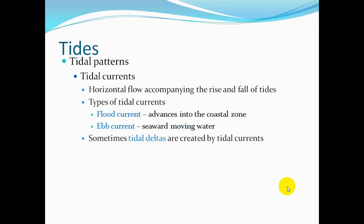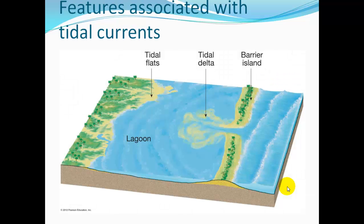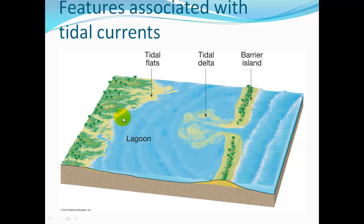Tidal currents are the horizontal flow accompanying the rise and fall of tides. Flood currents advance into the coastal zone, while ebb currents are seaward-moving water pushing back into the ocean. Tidal deltas can be created by tidal currents — where a barrier island has a navigational break, the flood current pulls water in and may deposit sediment just inside the barrier island, creating a tidal delta. On the ebb tide, the ebb current pulls water back out to the ocean.